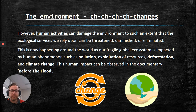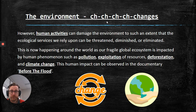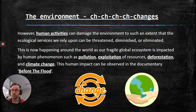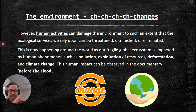Human activities can damage the environment to such an extent that the ecological services we rely upon can be threatened, diminished, or even eliminated. This is now happening around the world as our fragile global ecosystem is impacted by human phenomena such as pollution, exploitation of resources — so if I take a cup of water out of the river that's using a natural resource, but if I take the whole river I am exploiting it, taking advantage of it, ruining that resource for everyone — deforestation, and of course climate change.